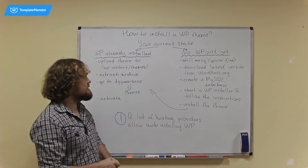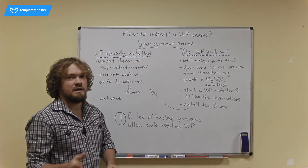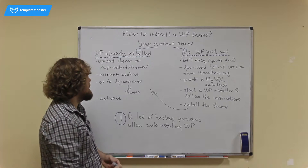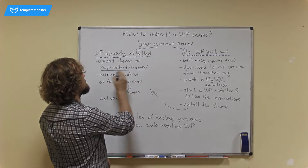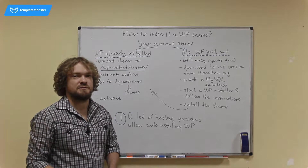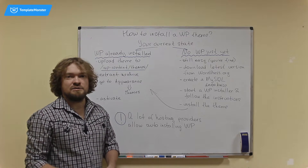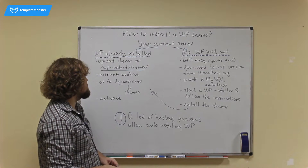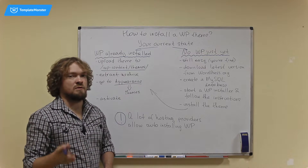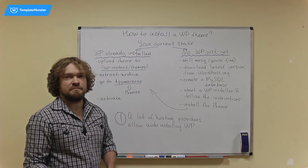If you haven't installed WordPress yet, things are absolutely easy for you. You take your theme files either as an archive or already extracted as a regular folder, and you upload it to this directory: wp-content/themes. That's where your WordPress themes live. After you're done uploading and possibly extracting, you just go to the Appearance section in your WordPress menu, locate Themes, find the theme you just uploaded, and activate it. That's it.